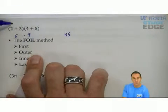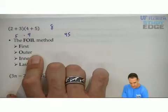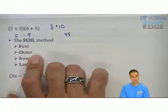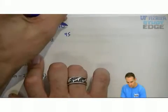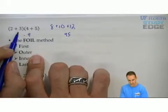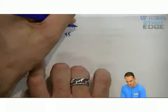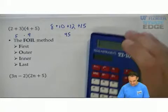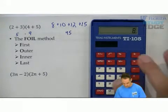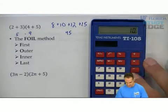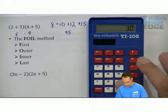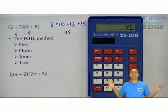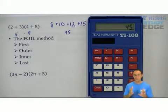2 times 4 gives 8, 2 times 5 gives 10, 3 times 4 gives 12, and 3 times 5 gives 15. Adding them all together: 8 plus 10 plus 12 plus 15, I still get 45.